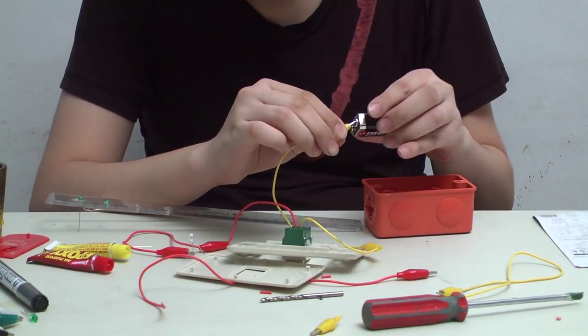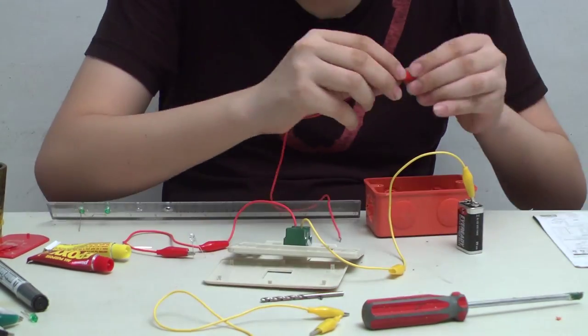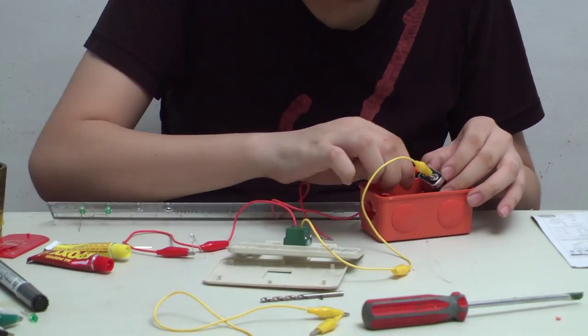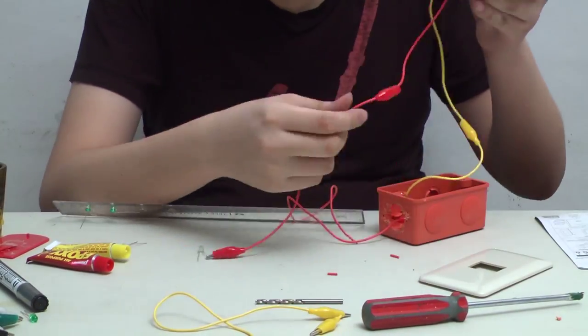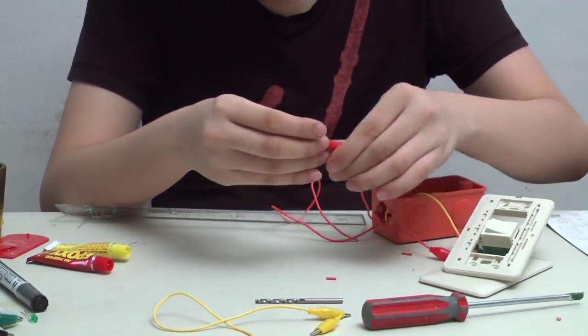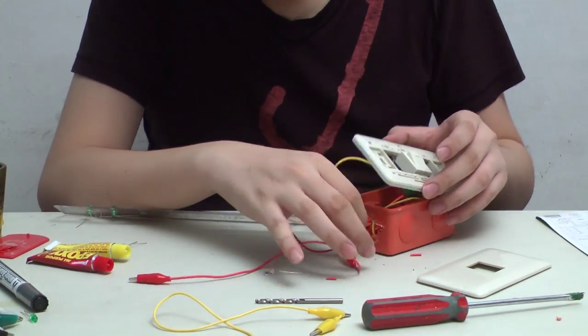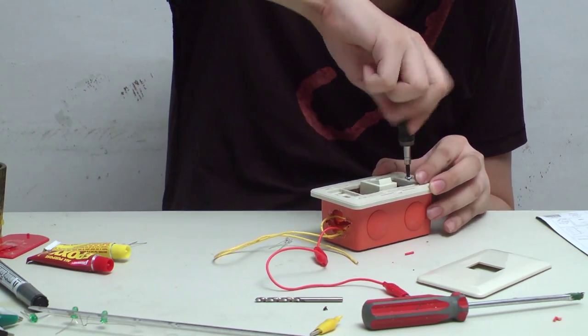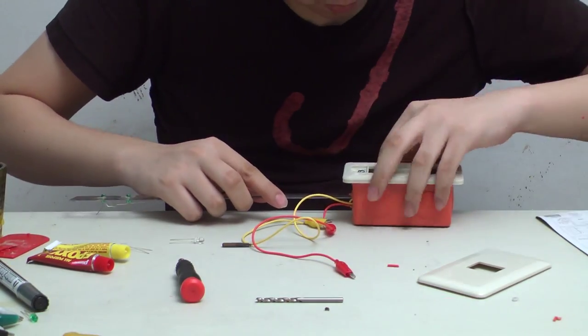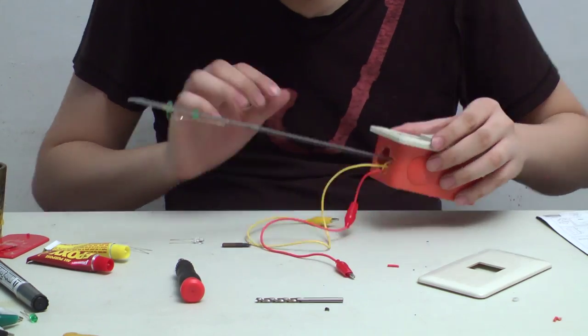After everything is set, we assemble the light tool. So we first put in the battery inside the electrical box. Then we fix the wires. After everything is in place, we now begin to screw in the light switch. And, stuck in the ruler.